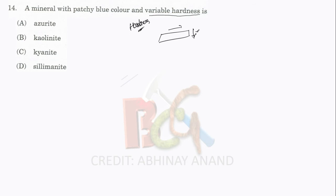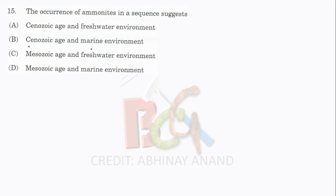You can solve a lot of questions easily. Next, let's go to our last question. This question is about ammonites. If ammonites are available, what does it tell you? The answer will be related to the Mesozoic age and marine environment.